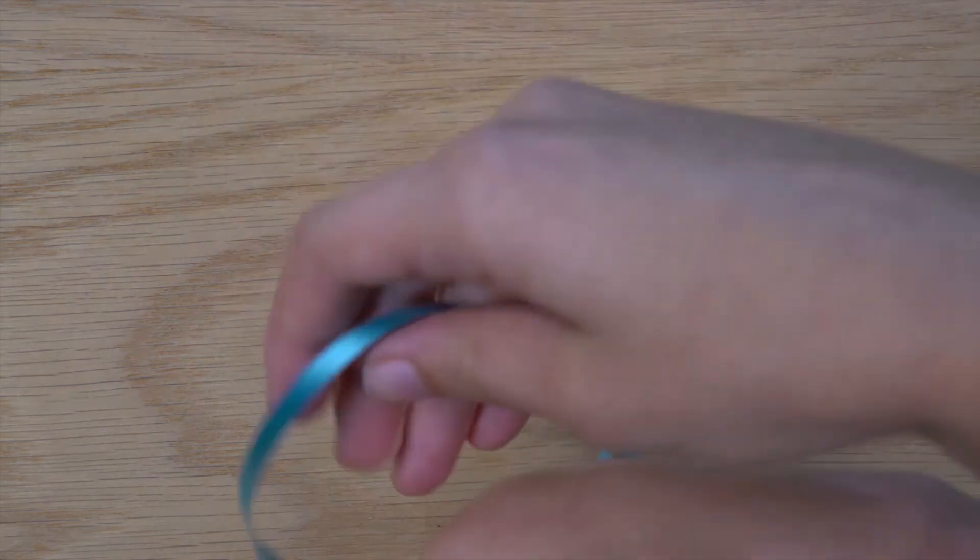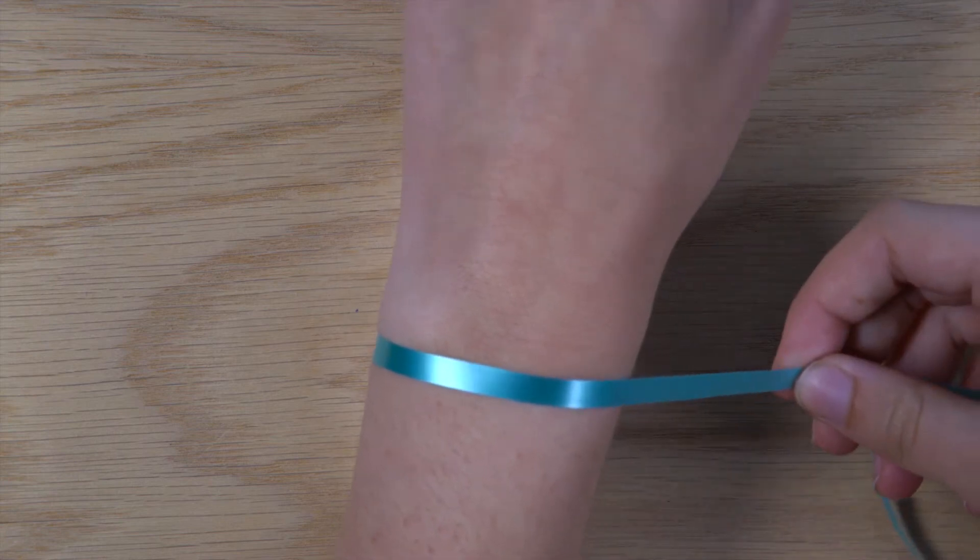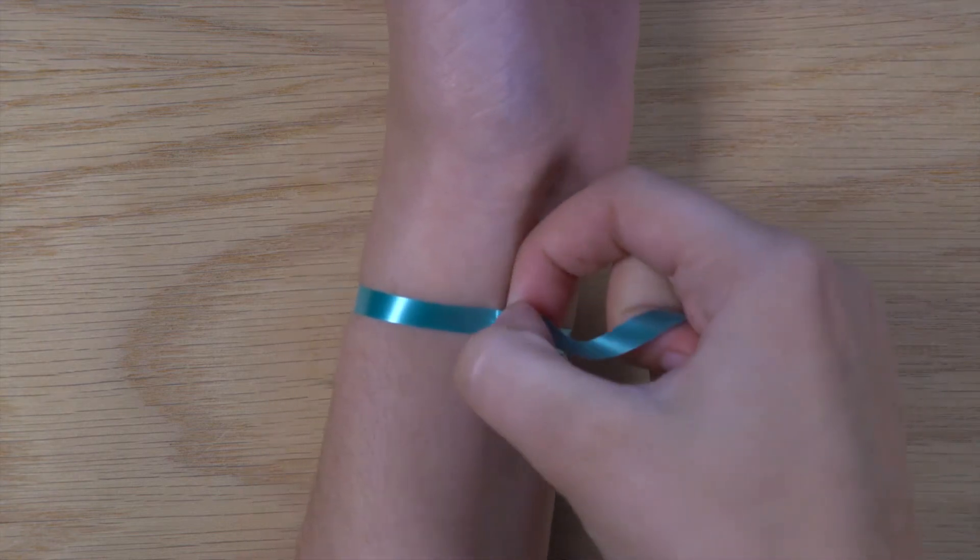Then, wrap the ribbon so it falls just above your wrist bone. Wrap the ribbon around so the ends meet and pinch with your thumb and forefinger.